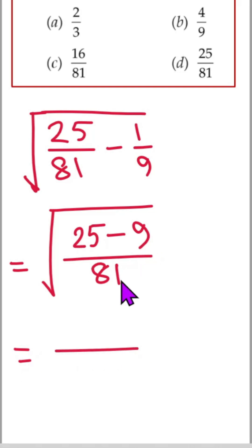Then 25 minus 9 is 16 and here is still 81. 16 and 81 both are perfect squares.